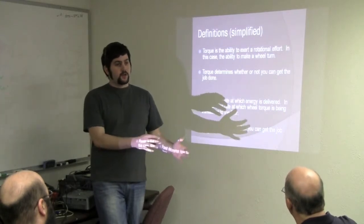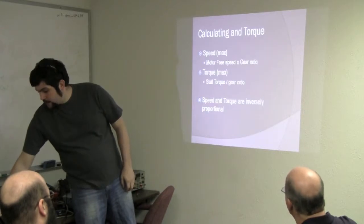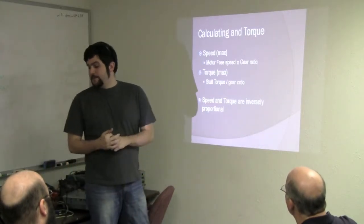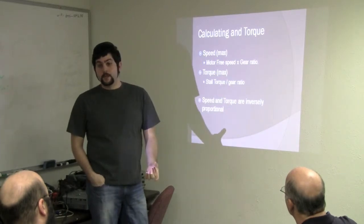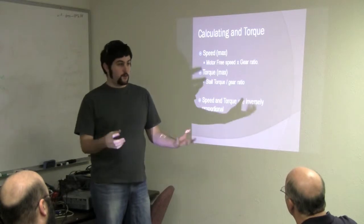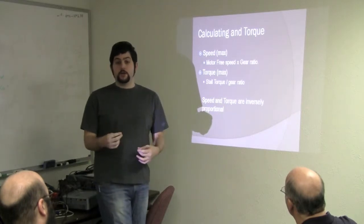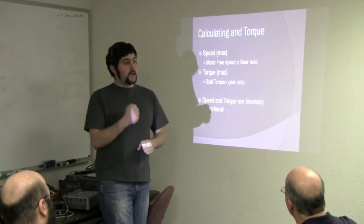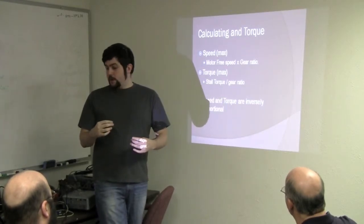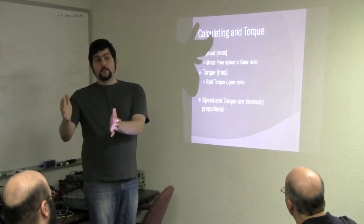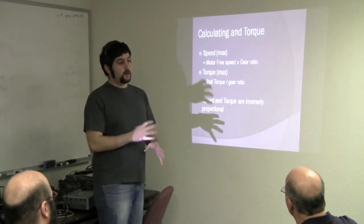So different ways to transmit that speed is basically your motor's free speed times your gear ratio. So if you get a motor that's 20,000 RPM and you want your wheel to be 1,000 RPM, you need a 20 to 1 gear ratio. Torque is the stall torque divided by the gear ratio. So at the torque that your motor cannot spin anymore, divided by your gear ratio, divided by 20, that's going to be your torque. So speed and torque are inversely proportional. The faster you go, the less torque you have. The slower you go, the more torque you have. They're directly related to each other.